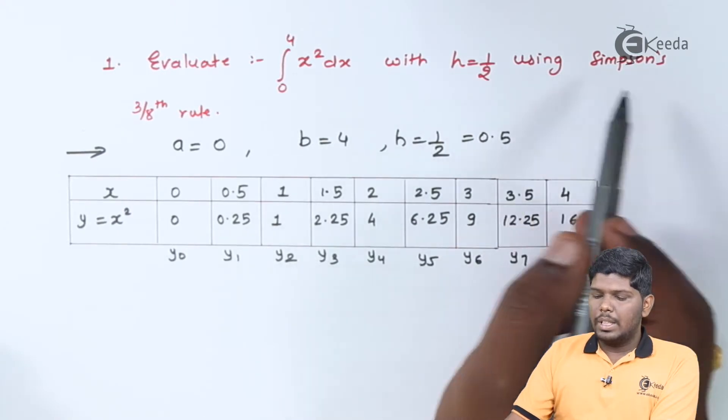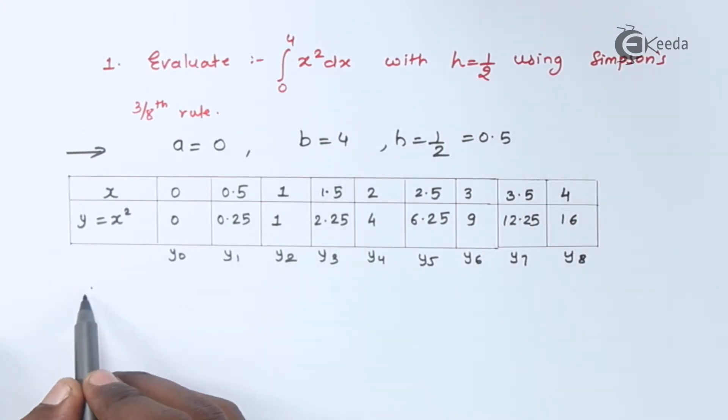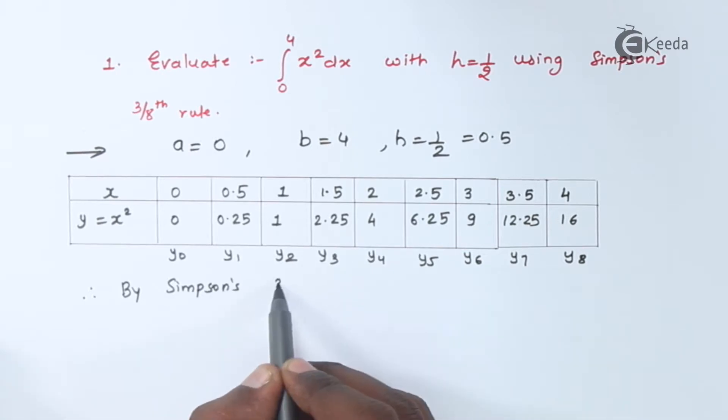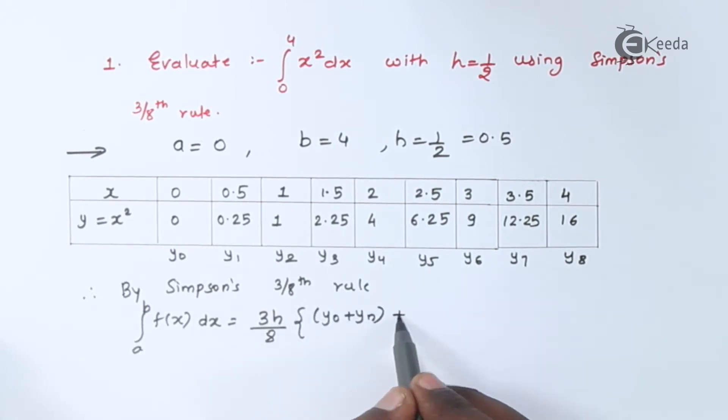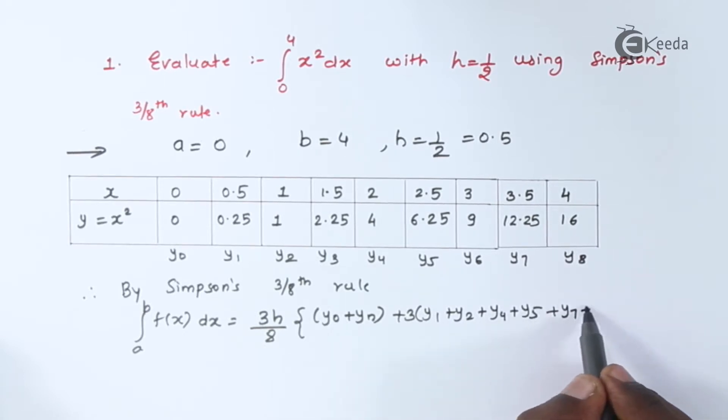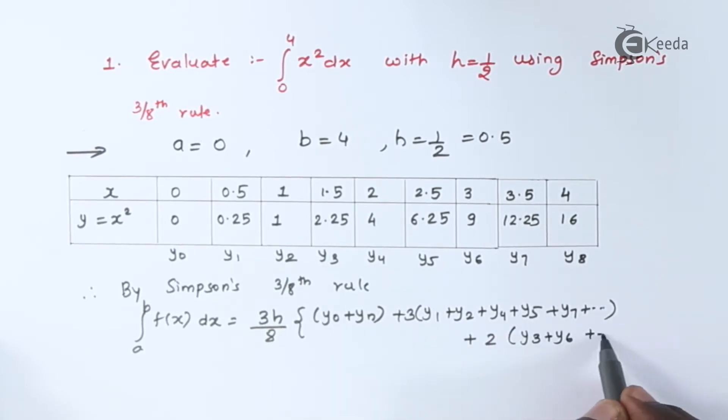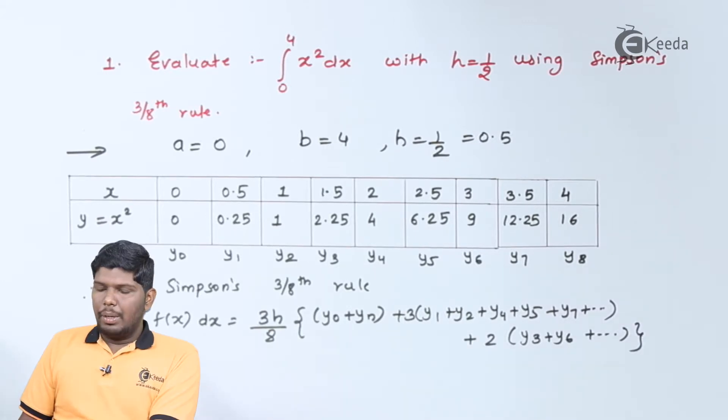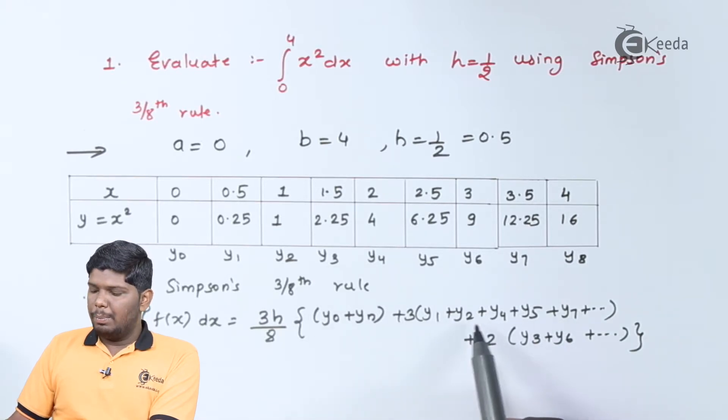Now, let us write Simpson's 3 by 8 rule, which is given by the formula integral a to b f of x dx equals 3h by 8 into y0 plus yn plus thrice y1 plus y2 plus y4 plus y5 plus y7 plus twice y3 plus y6.